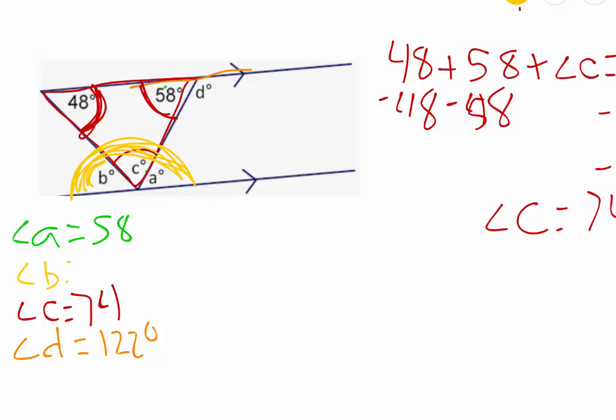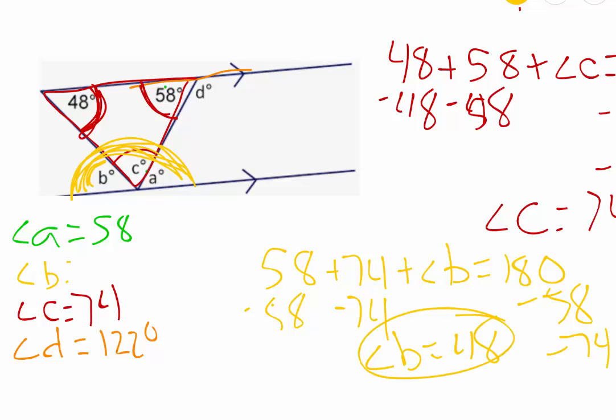So angle A, B, and C should all be 180. We now know that angle A is 58, angle C is 74. So whatever that is with angle B, it should equal 180 degrees. And if we take that 180 and we subtract the 58 away, we subtract the 74 away, from each side here, angle B should be 48 degrees.